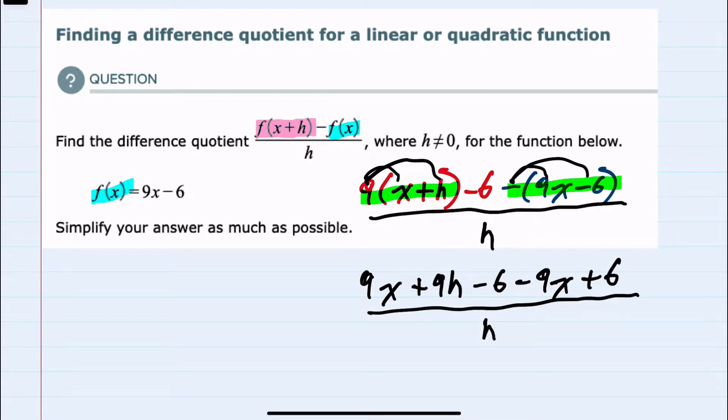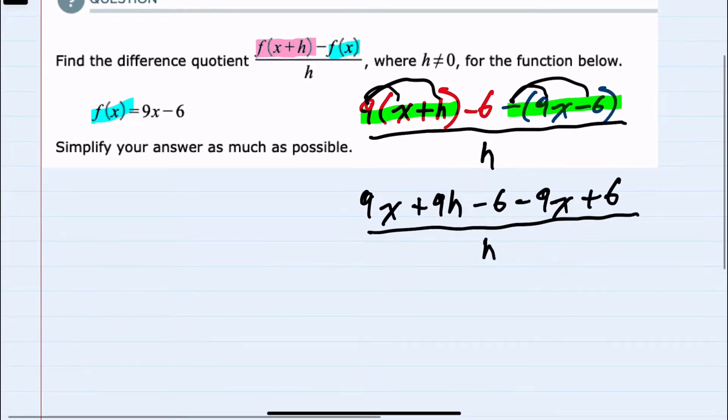And from here we have some like terms that we can combine. When we look at the x terms, we have a positive 9x and a minus 9x. Those will cancel when they combine, so we will have no x's left. And we also have a minus 6 constant and a plus 6 constant. Those will cancel, so we'll have no constant terms left.